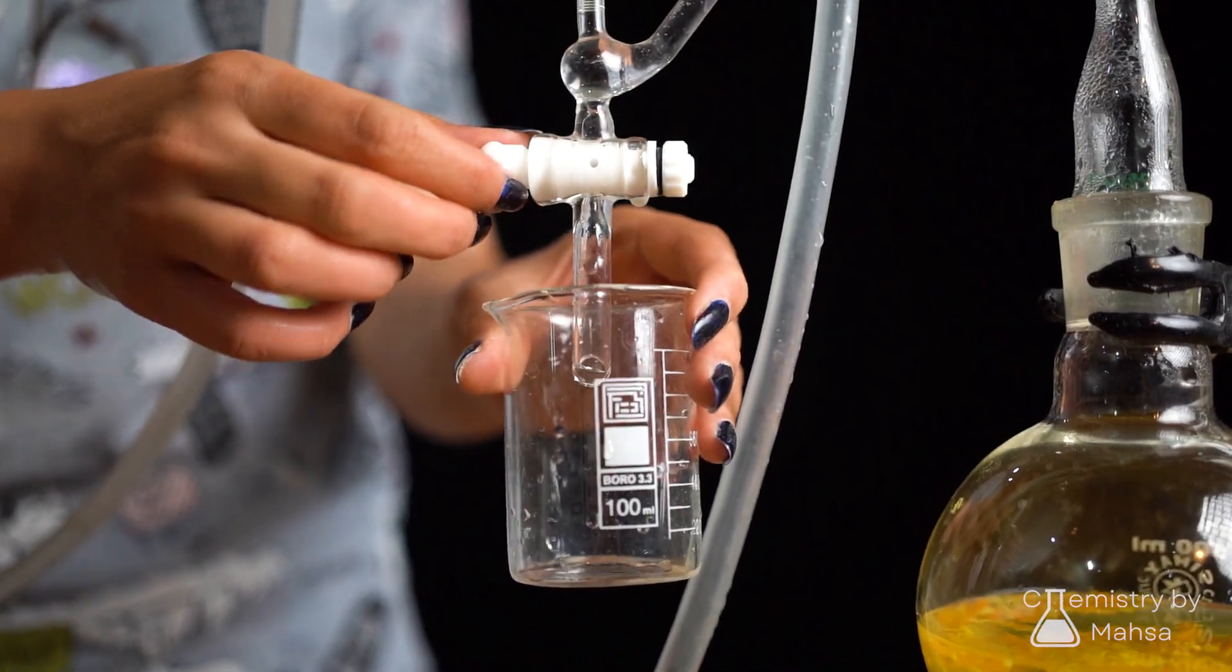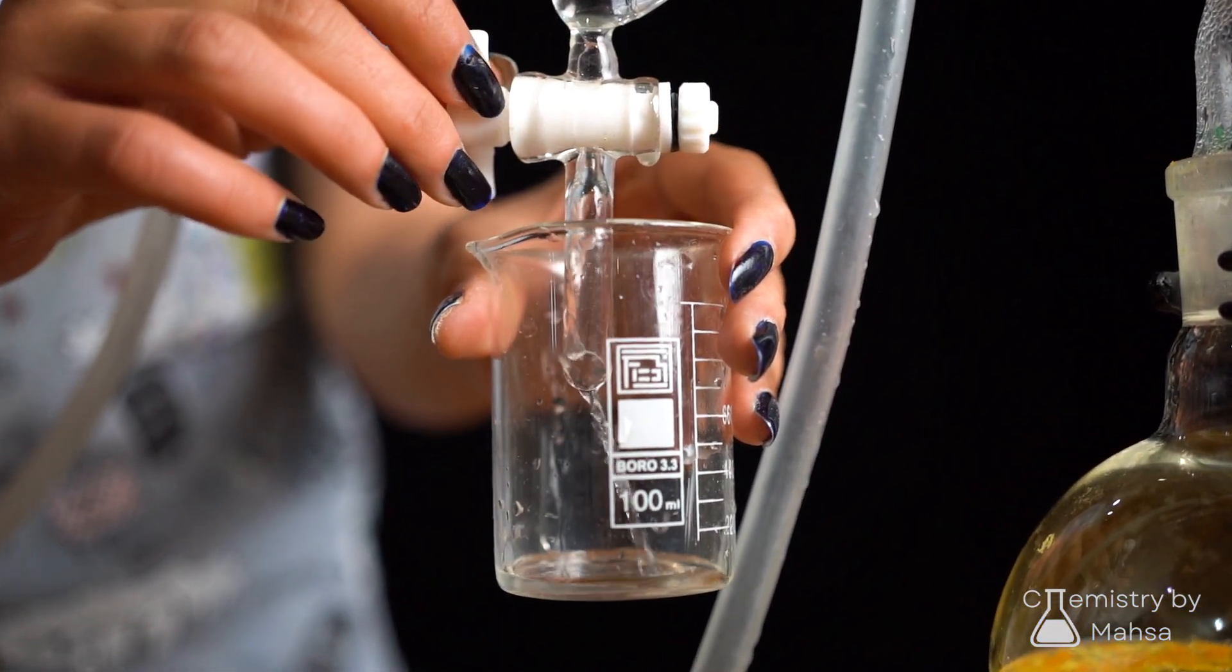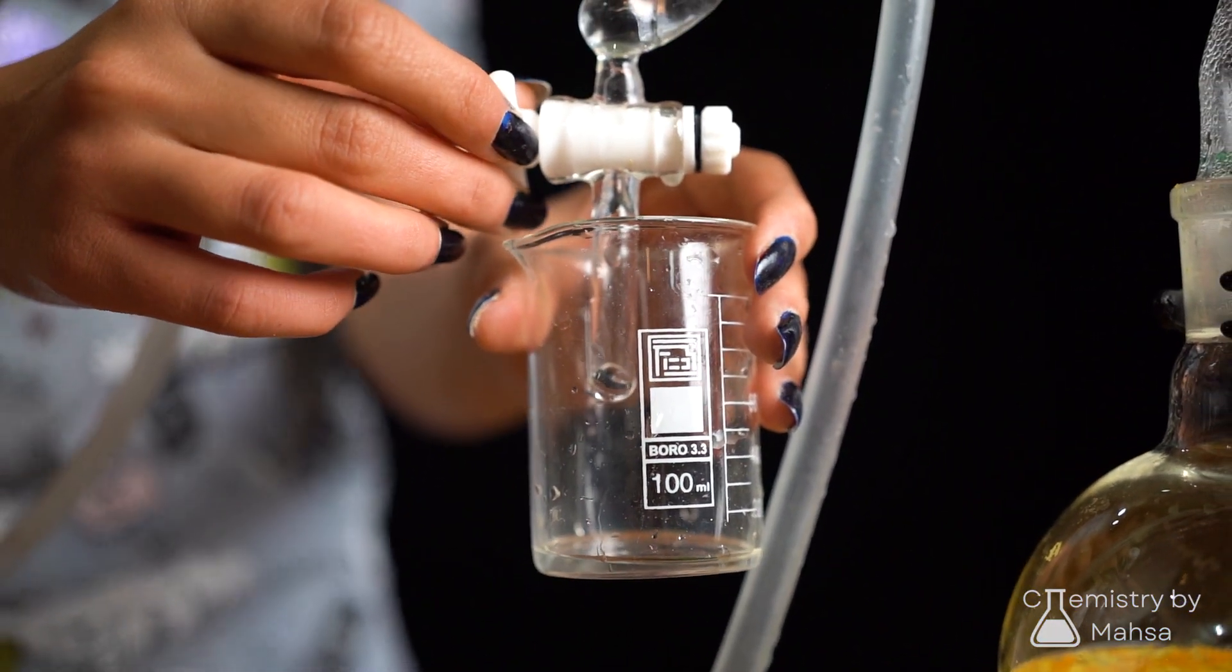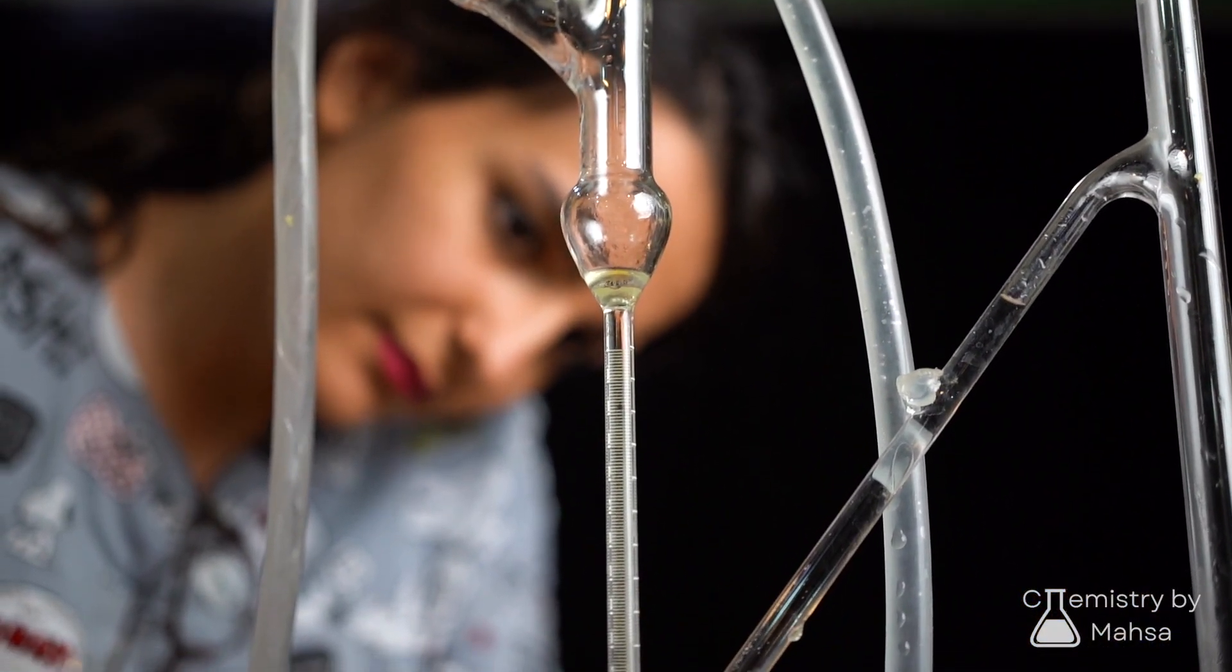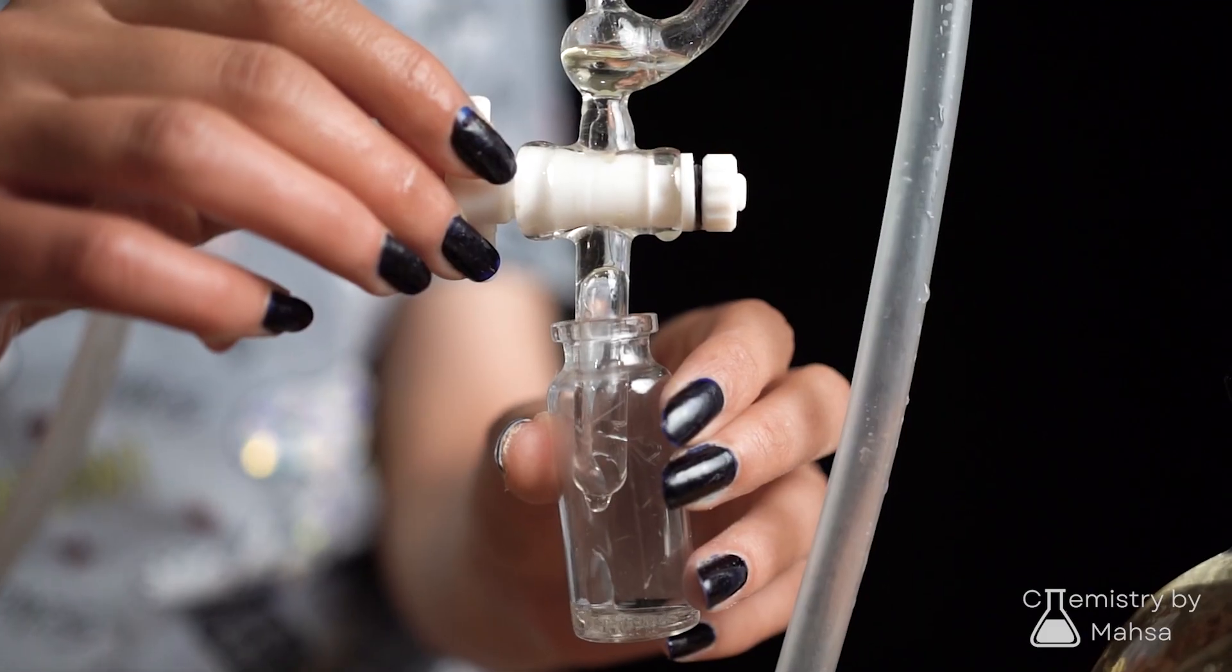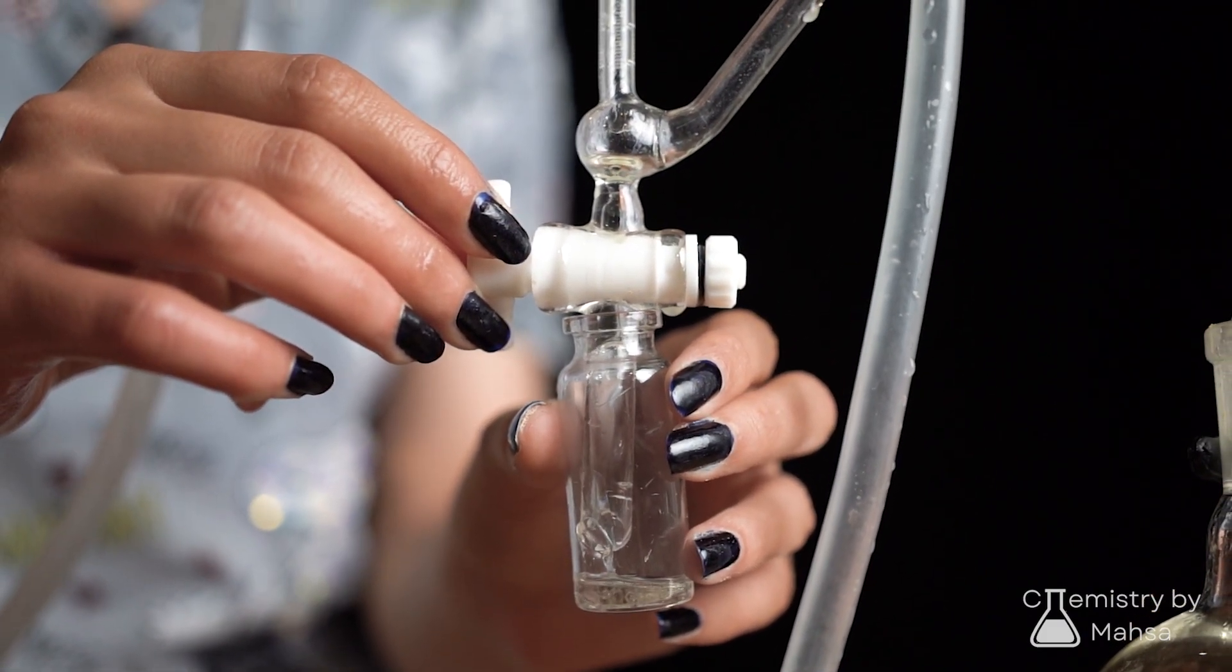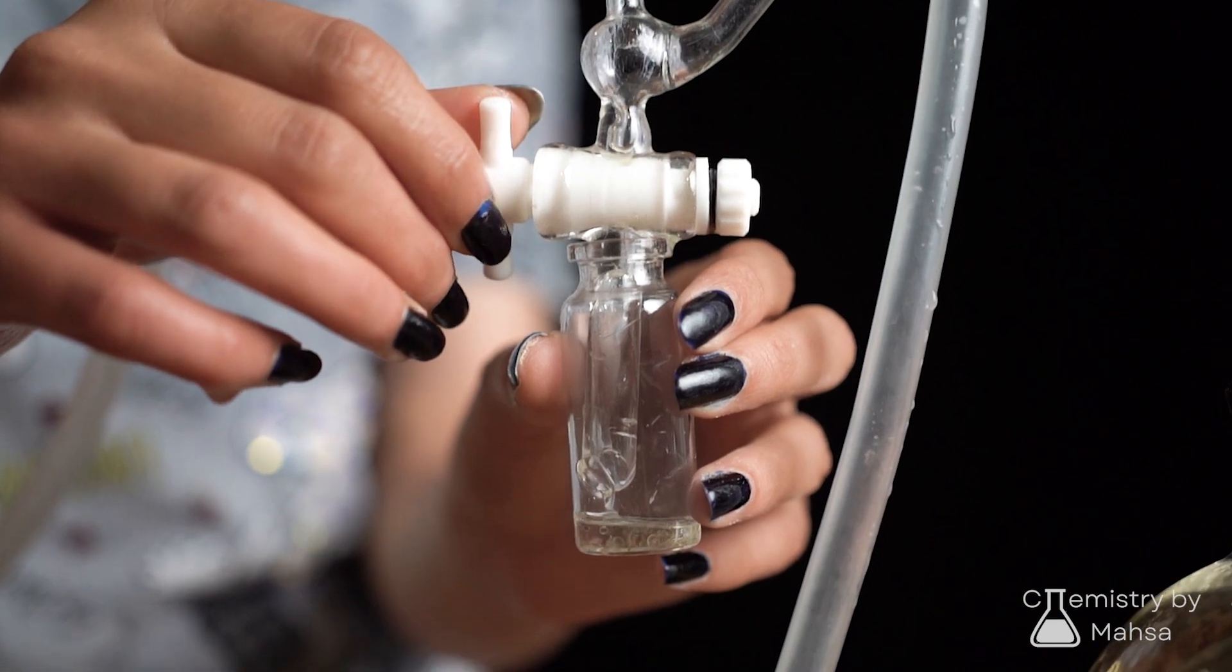After a couple of hours, you can see two layers forming, and the one on the top is your essential oil. You can tell when the process has finished when the amount of essential oil is not increasing anymore. For more accuracy, you can use a separatory funnel, but here I just use the Clevenger's own valve.